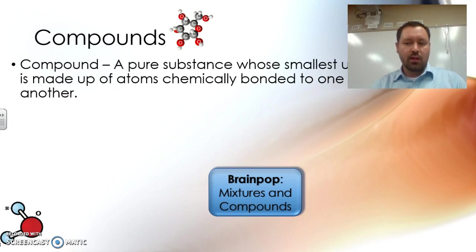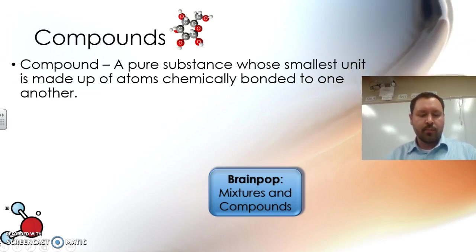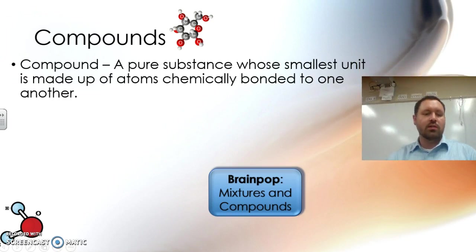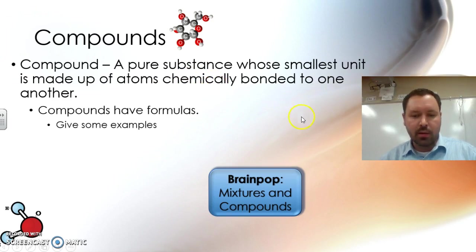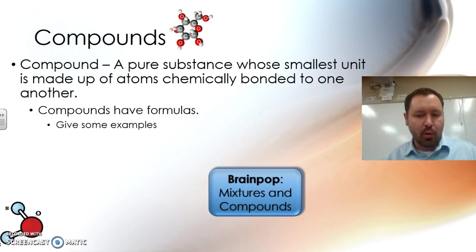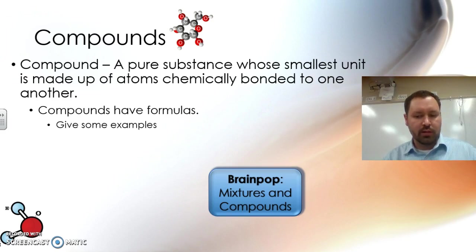One of the new things we need to talk about is a compound. A compound is a pure substance whose smallest unit is made up of atoms chemically bonded to one another. The absolute key here is chemically — they have to be chemically bonded to each other. They can't just be put together in a bowl and mixed up. We'll talk about chemical bonds later on.